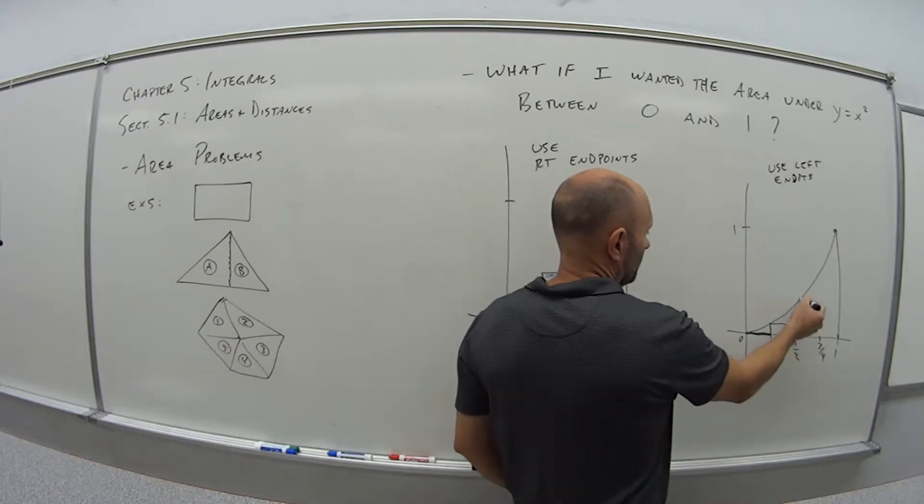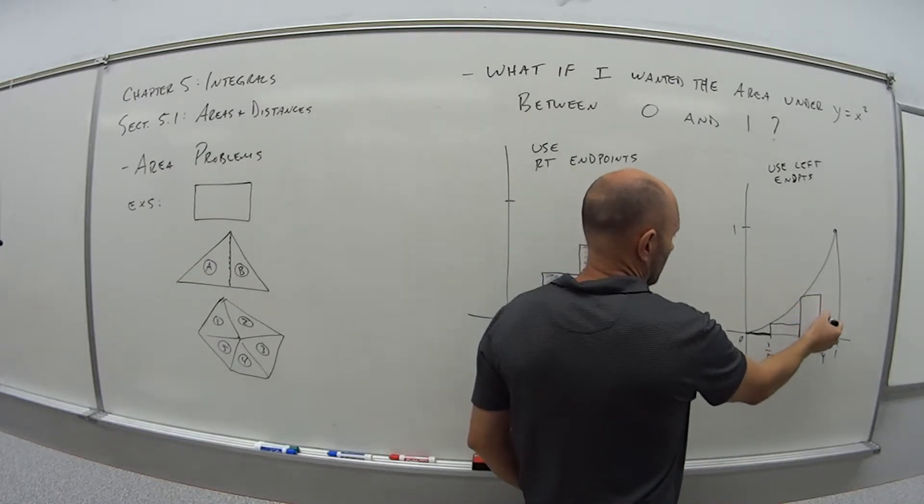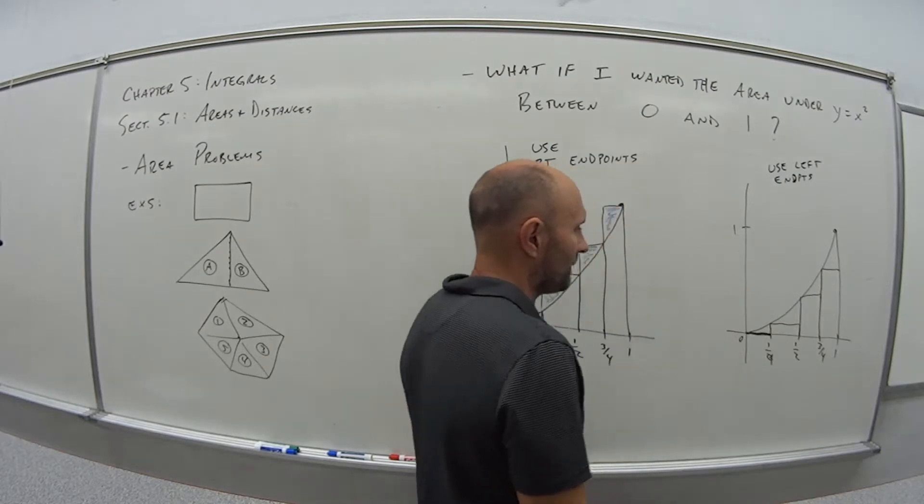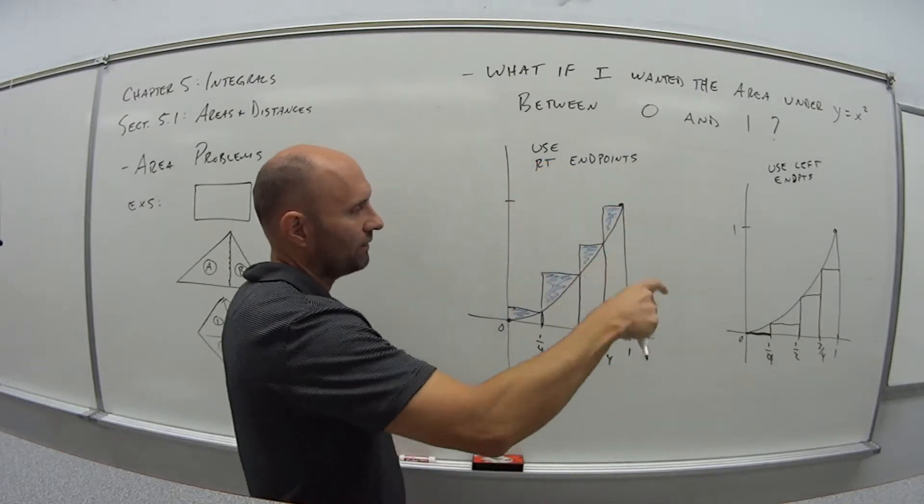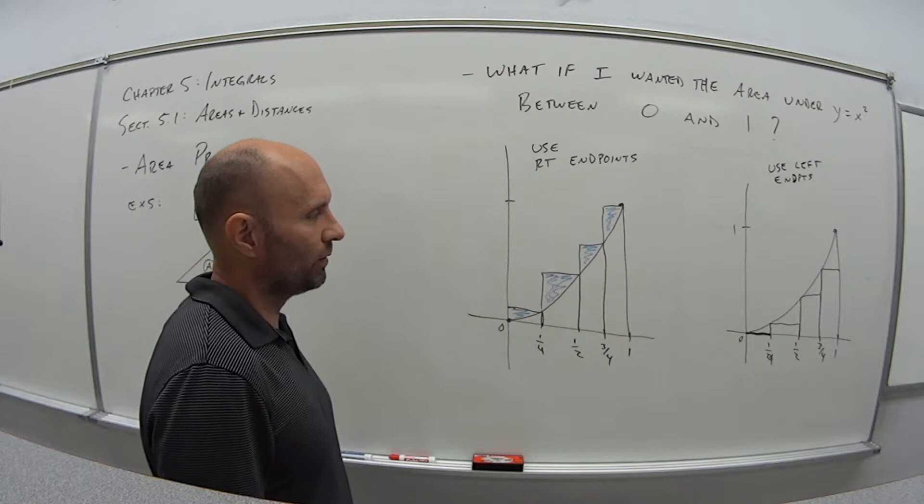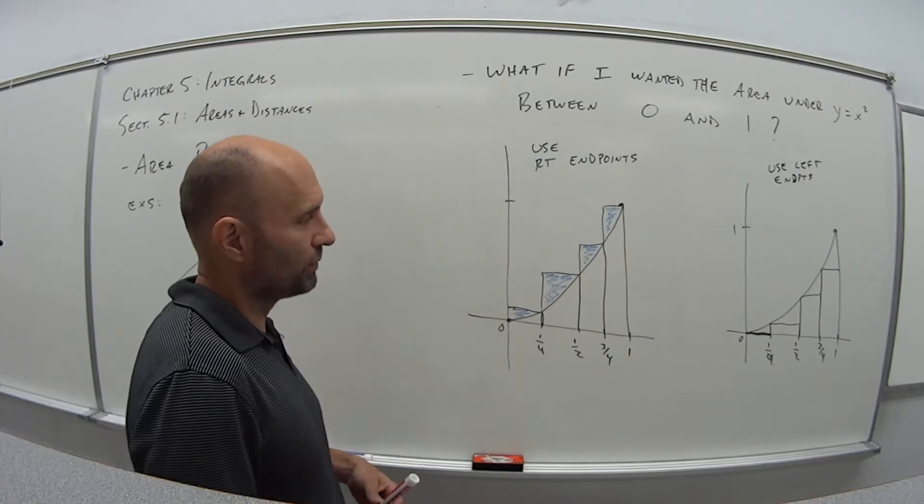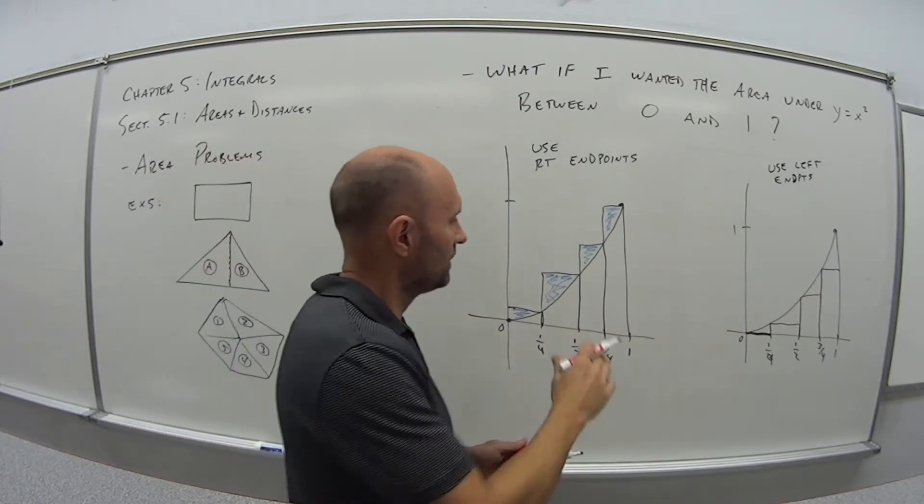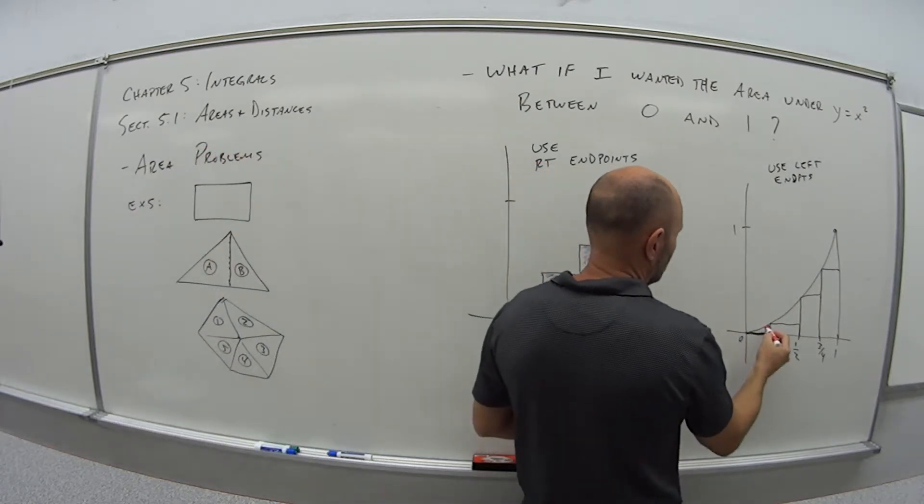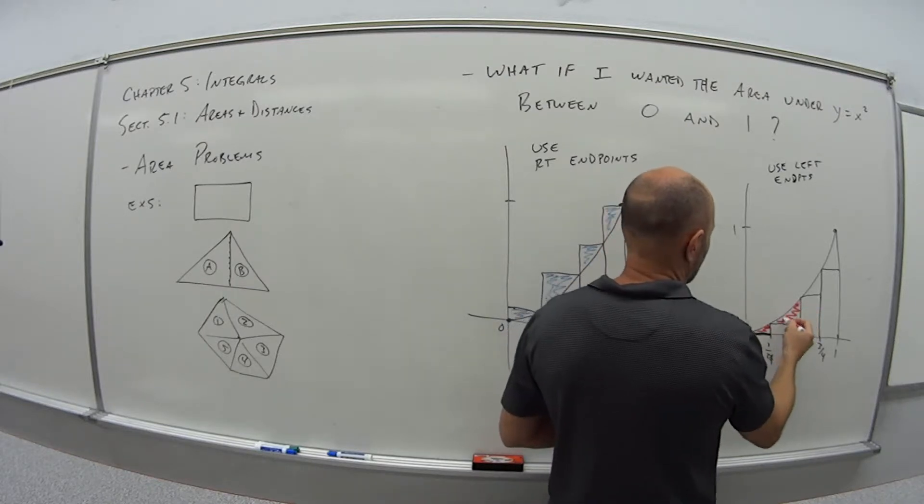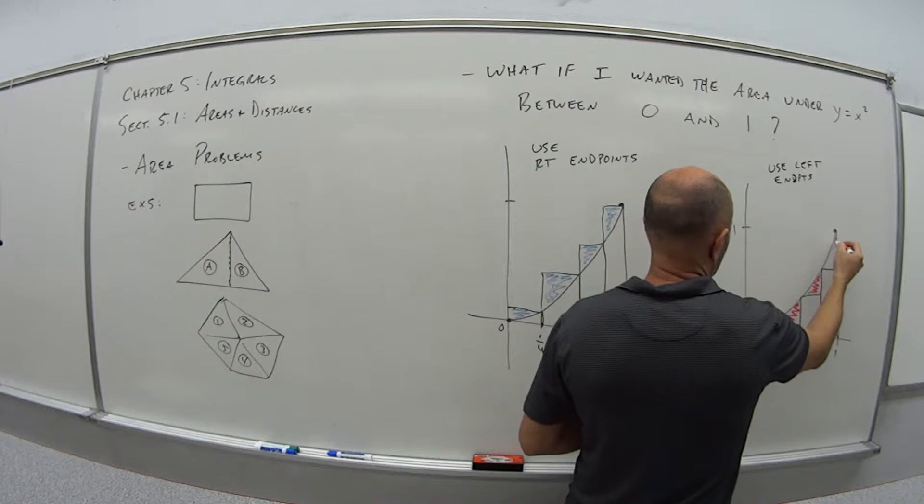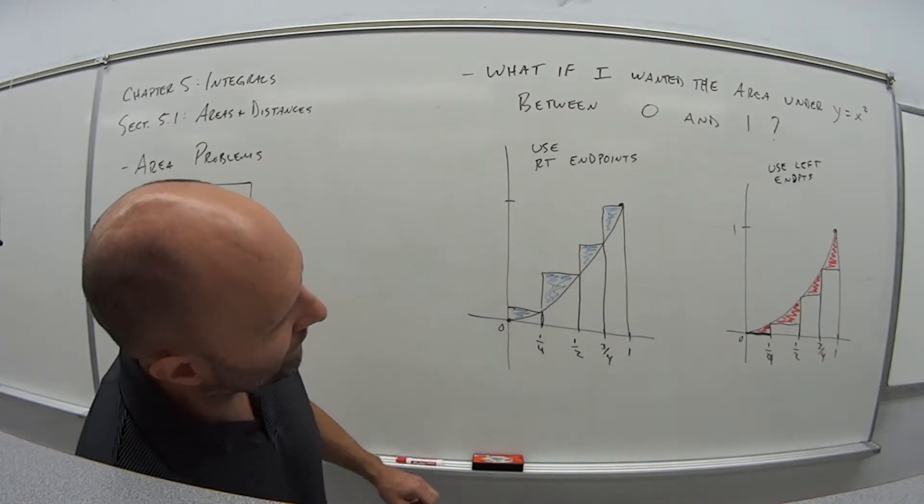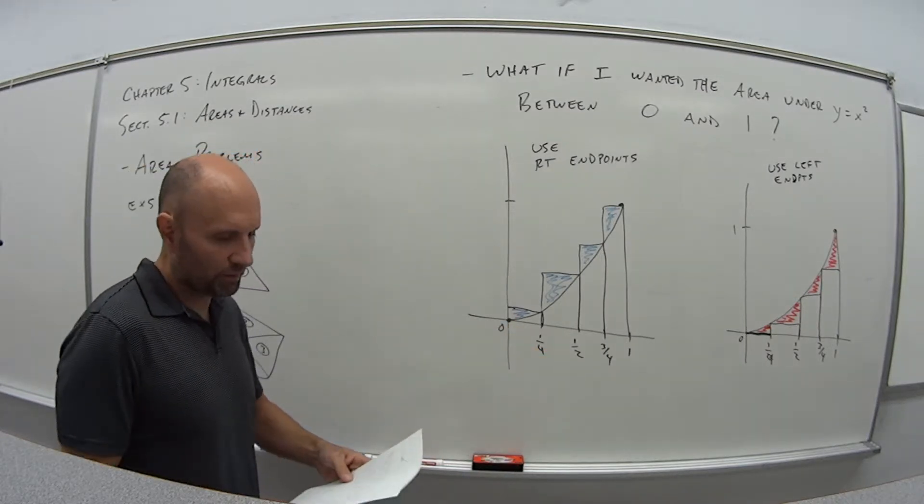At a half, go up to the curve, come over, come down. And at 3 fourths, come up, come over, and that gives me my last one. So, that gives me three, technically four, but really just three rectangles. If I add all those up, it will give me another rough estimate of what the area is under the curve. But the problem here is what? Well, now I'm missing all of this red. So, in the first one, I had too much. In the second one, I don't have quite enough. It's somewhere in the middle.